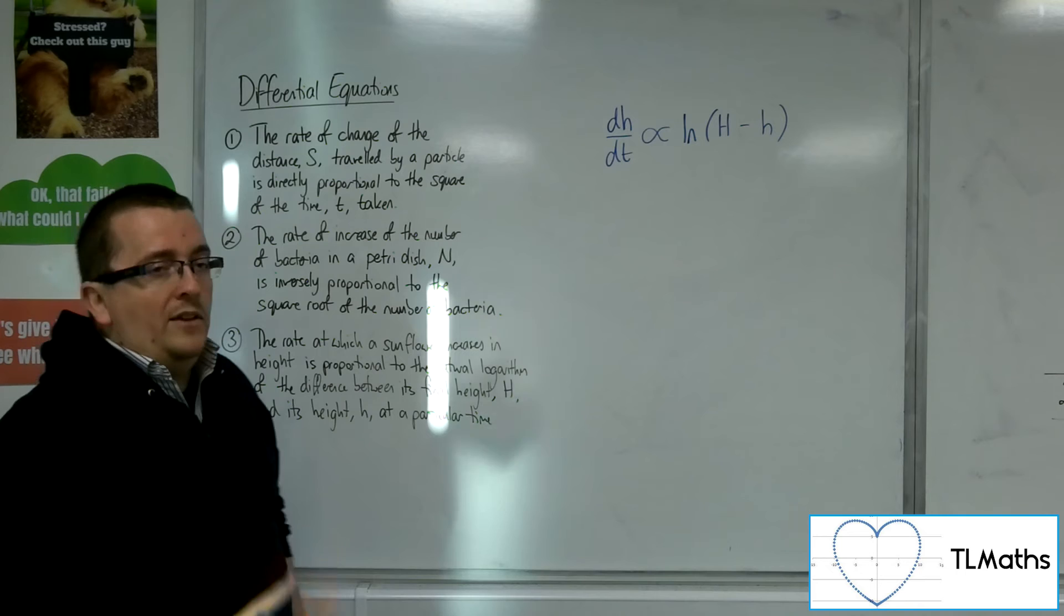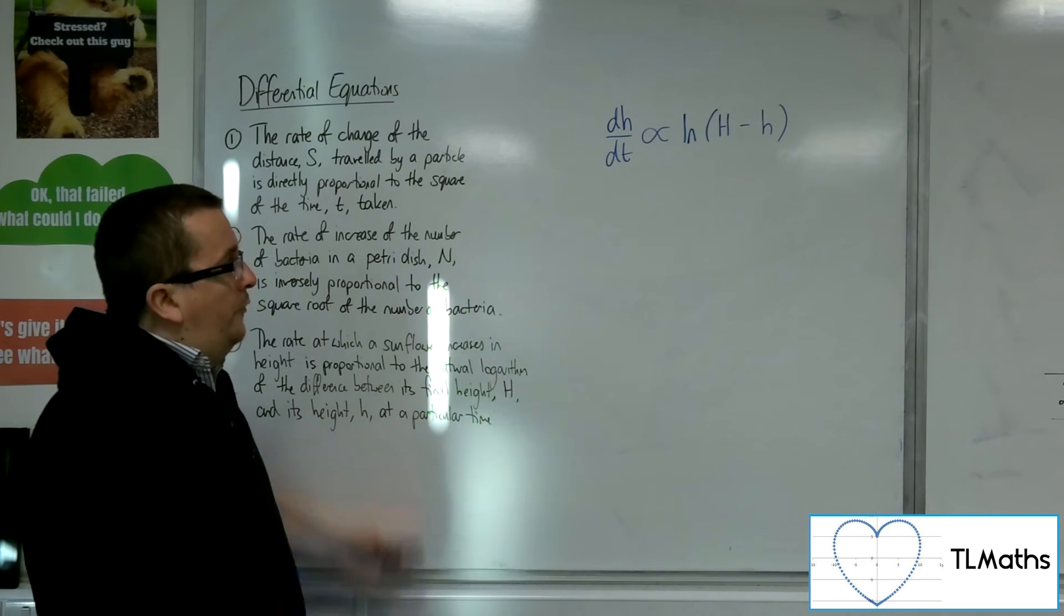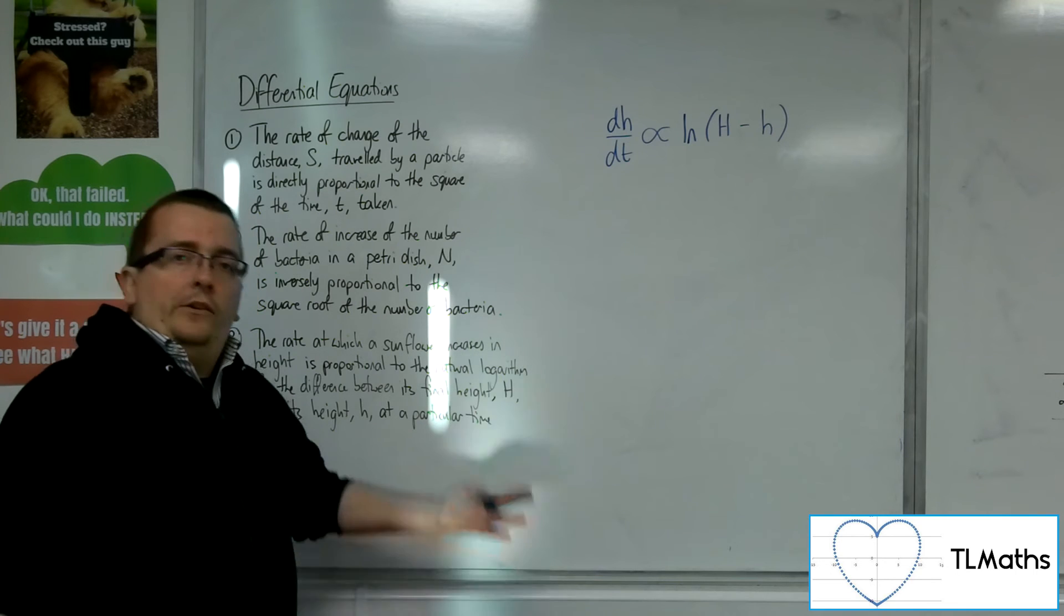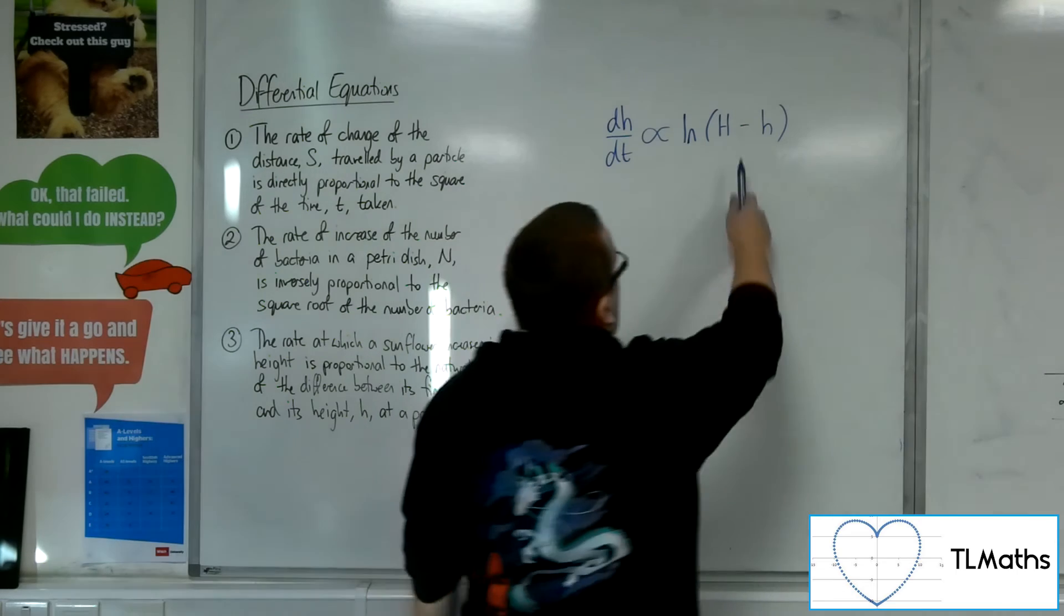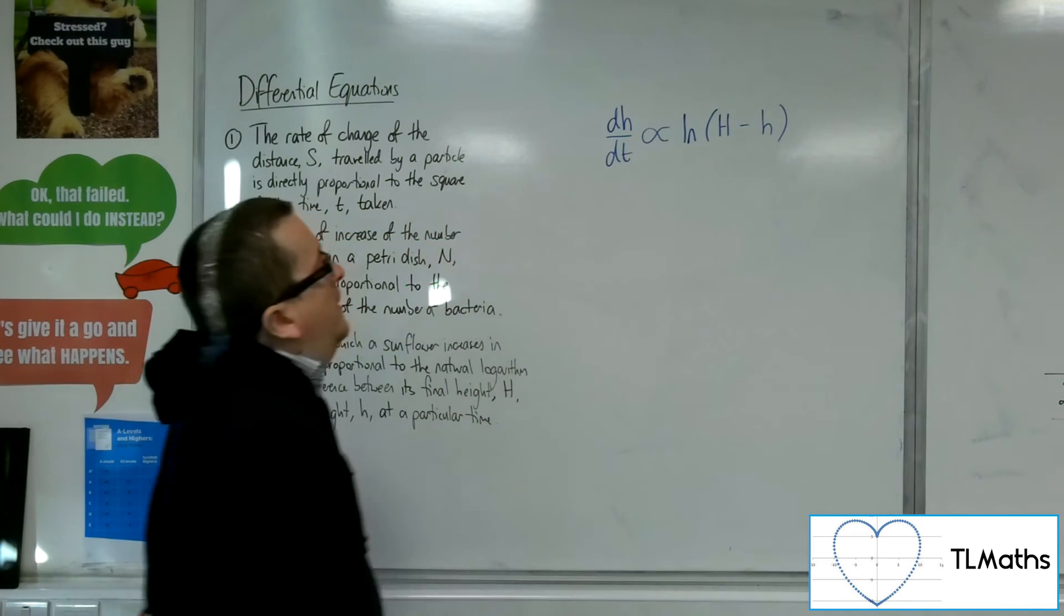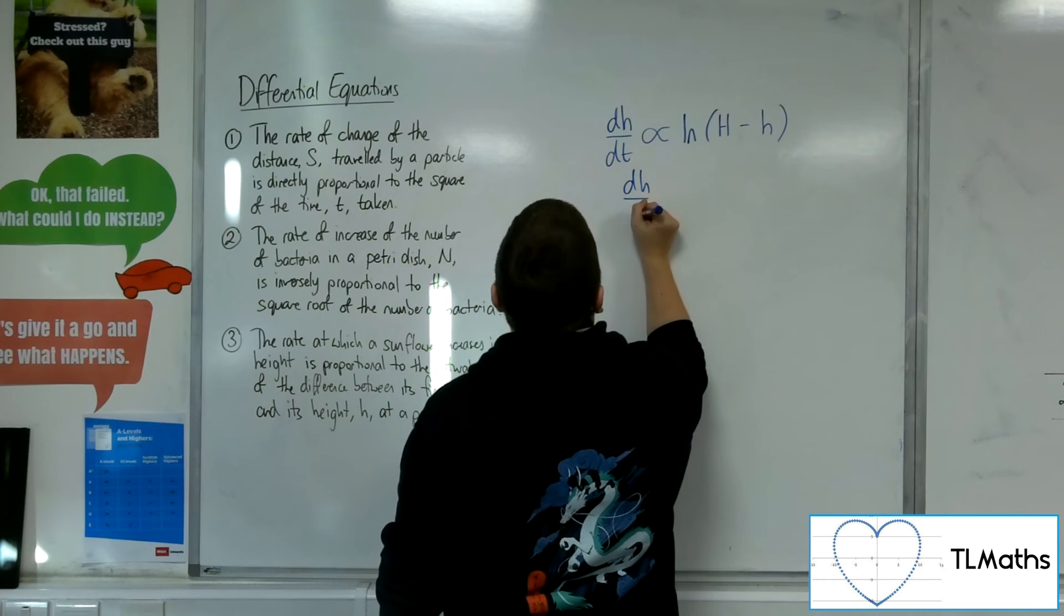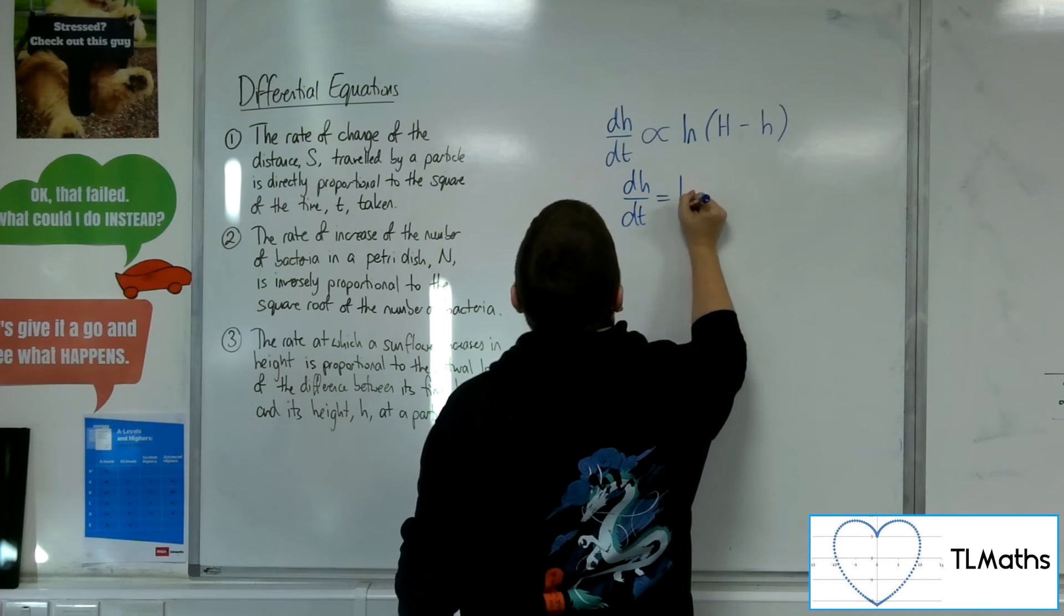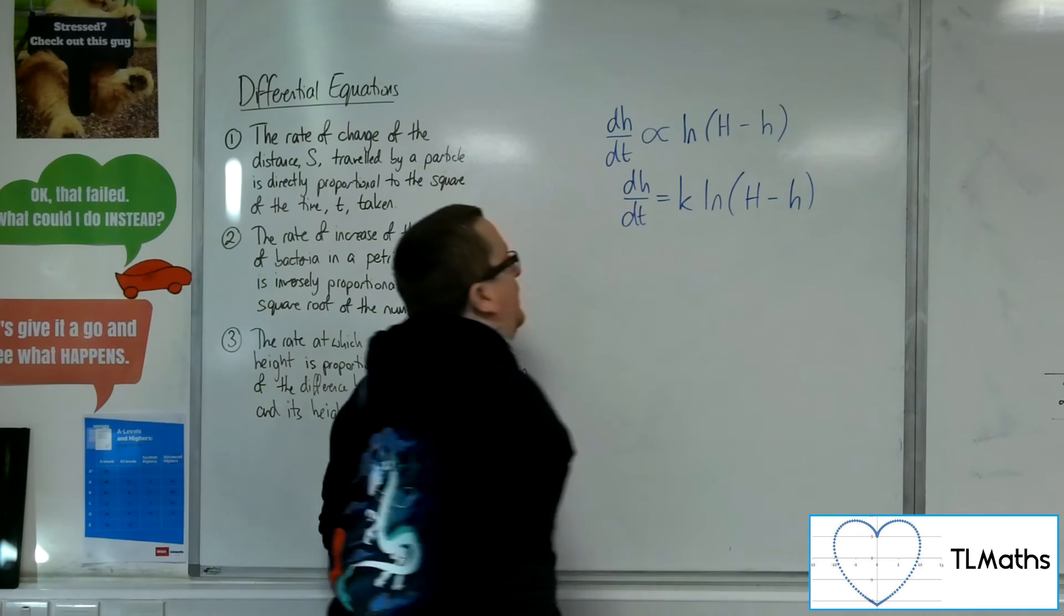Otherwise, what you'll get is a negative value within the logarithm, because its final height is certainly going to be as tall as it's going to get. So if we had it the other way around, we're going to get a negative value in there. So if we're saying that, then dh by dt must be k lots of the natural logarithm of capital H minus lowercase h.